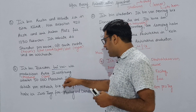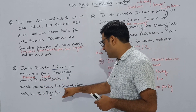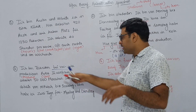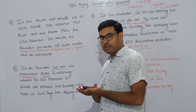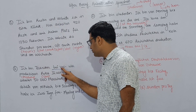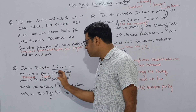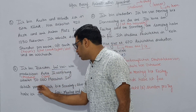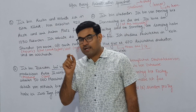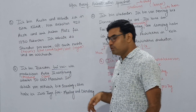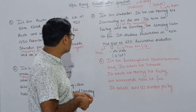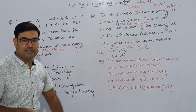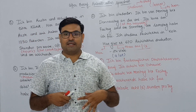'In Wolfsburg arbeiten 50,000 Menschen.' Menschen means people. So in Wolfsburg 50,000 people work. 'Ich arbeite von Mittwoch bis Sonntag.' From Wednesday till Sunday — I work from Wednesday to Sunday.